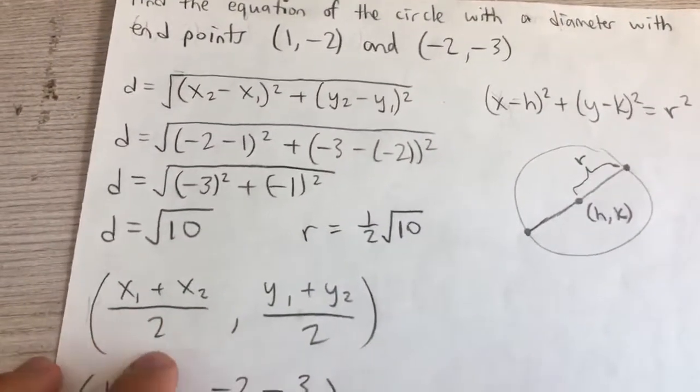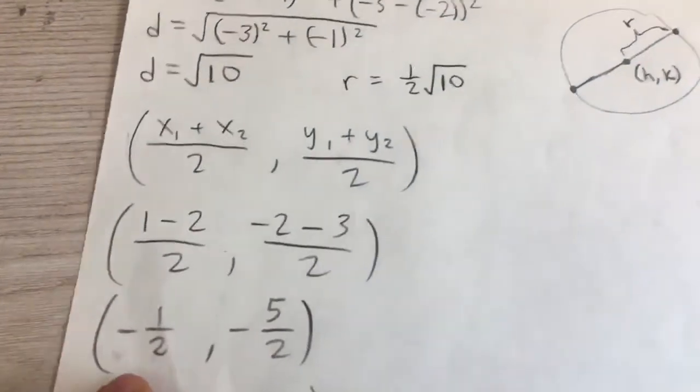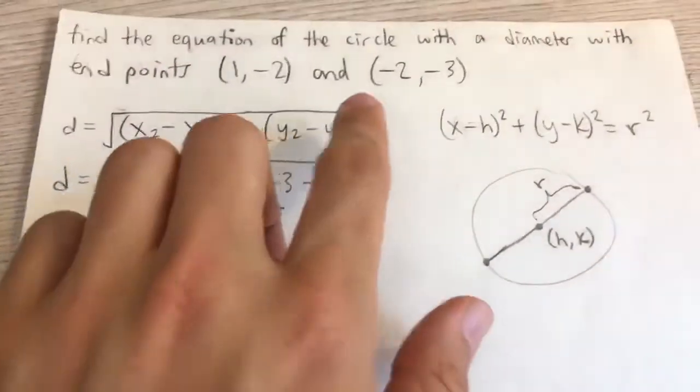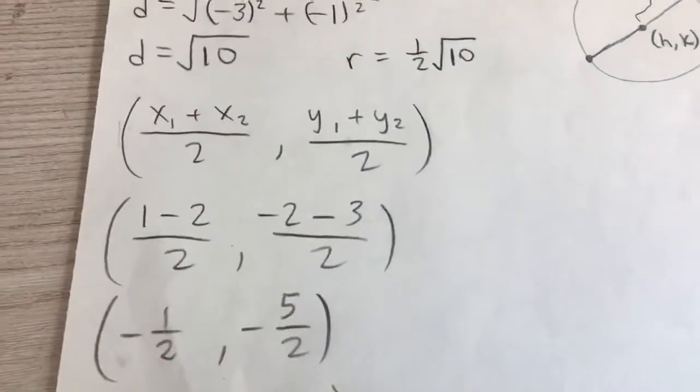We take the average of the two x values, so it's 1 minus 2 divided by 2, that gives you -1/2. And the average of the two y values, which is -2 minus 3 divided by 2, that's -5/2.